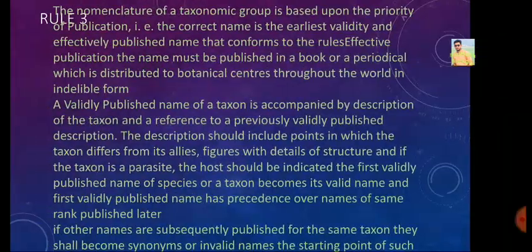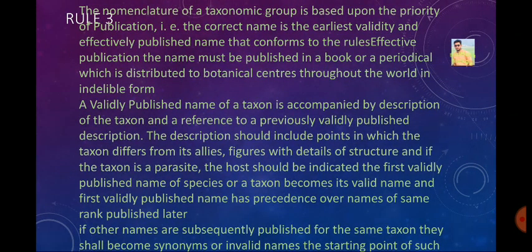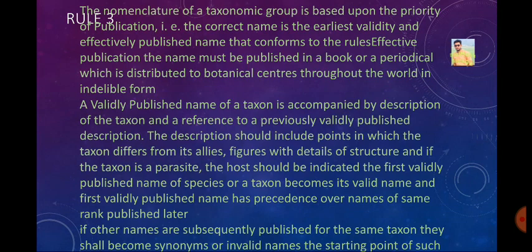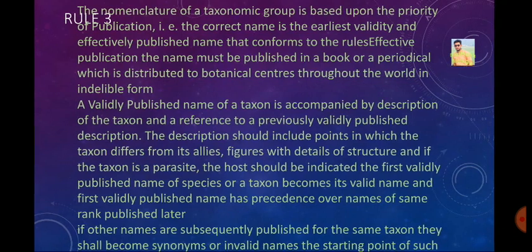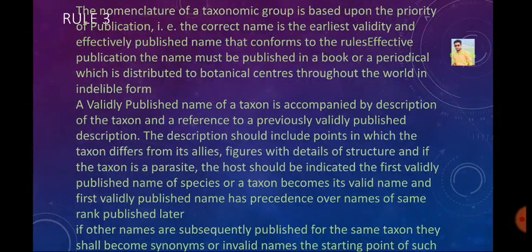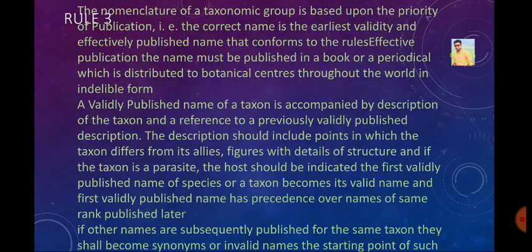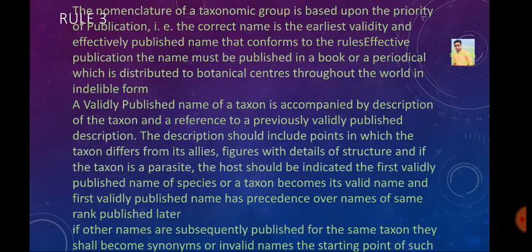Rule number 3 concerns effective and valid publication. The correct name of a taxonomic group is based upon the priority of publications — the earliest validly and effectively published name that conforms to the rules is the one we accept. Effective publication means the work is distributed through printed books or periodicals available in botanical centers throughout the world in indelible form.